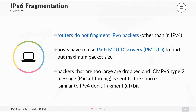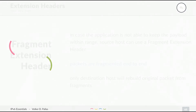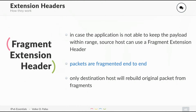That's similar to the IPv4 don't-fragment bit. If the application is not able to send the packets at the right size, there is one option: you can use a fragment extension header. The packets are fragmented end-to-end, but not from the application — from the host.